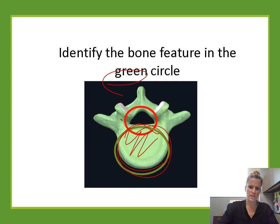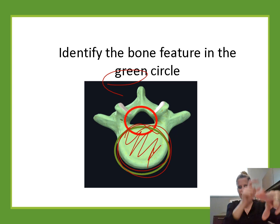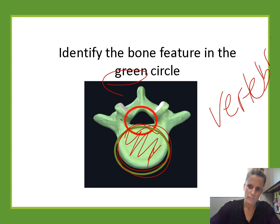Identify the bone feature in the green circle. This is pointing to the nice base portion of a vertebra — the large base where vertebrae stack together with intervertebral discs in between. That is the vertebral body.